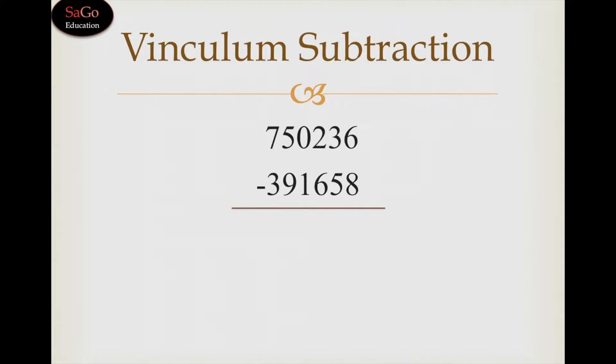We have a sum 750236 minus 391658. 6 minus 8, when we do it traditionally or conventionally we take borrow from the next digit which is 3. But here it is a little different. Here we can subtract 6 minus 8.